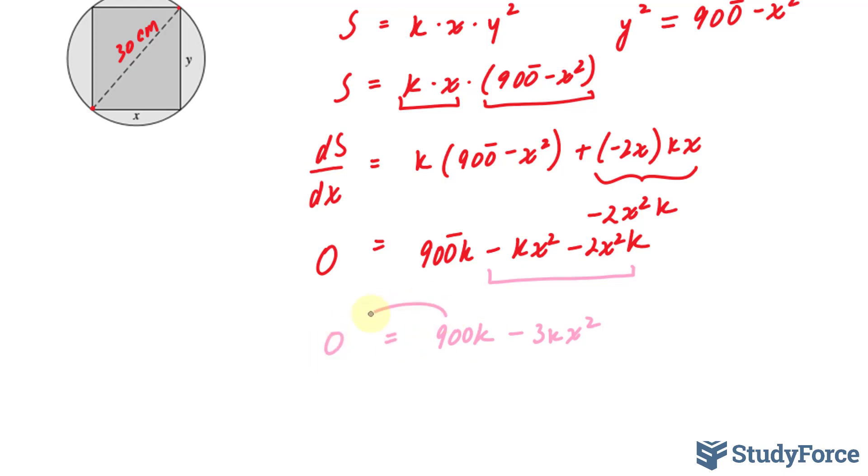I'll bring this over. Negative 900k is equal to negative 3kx squared. We can cancel out one of the k's and divide both sides by negative 3. It gives us 300 is equal to x squared.